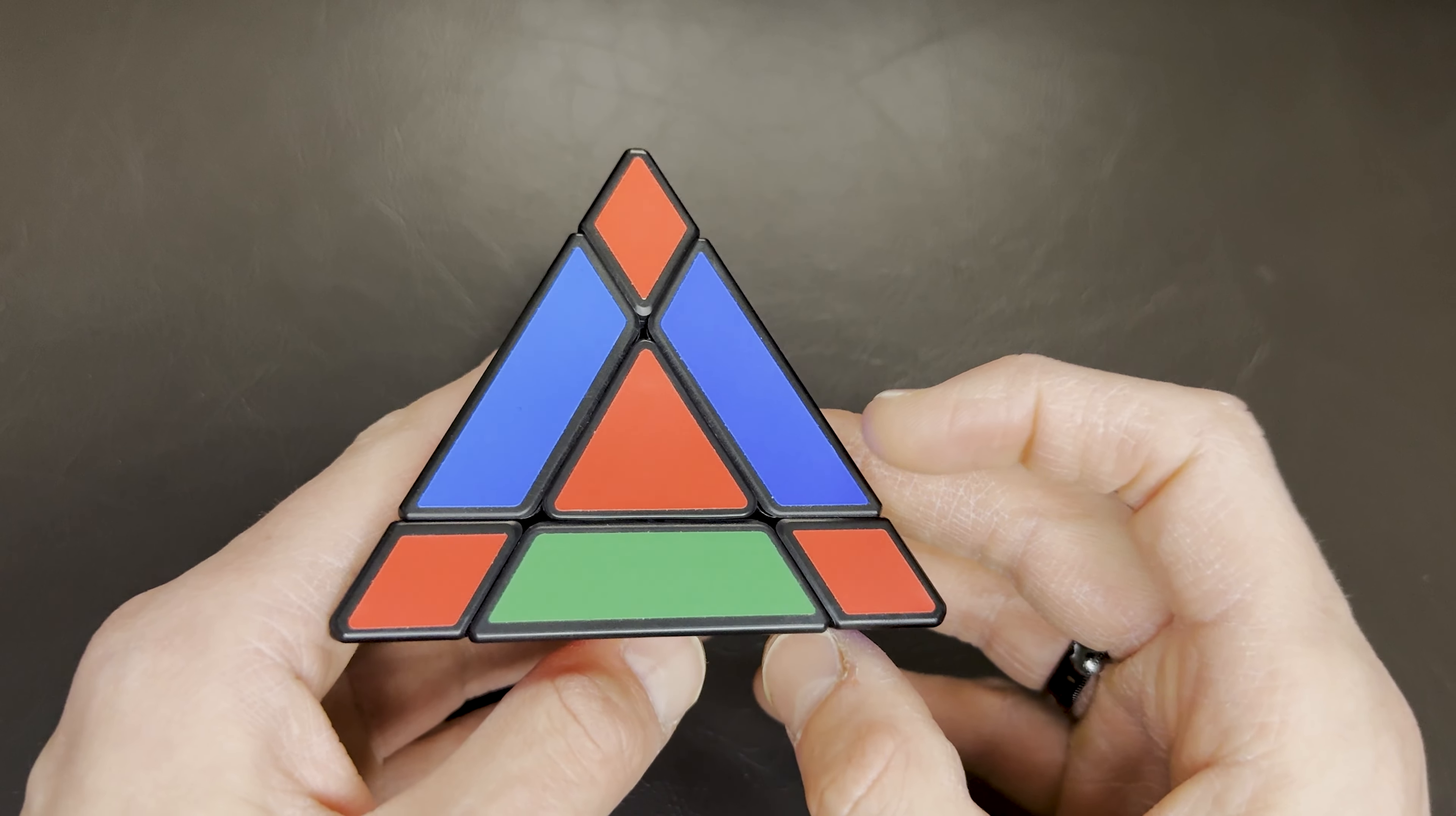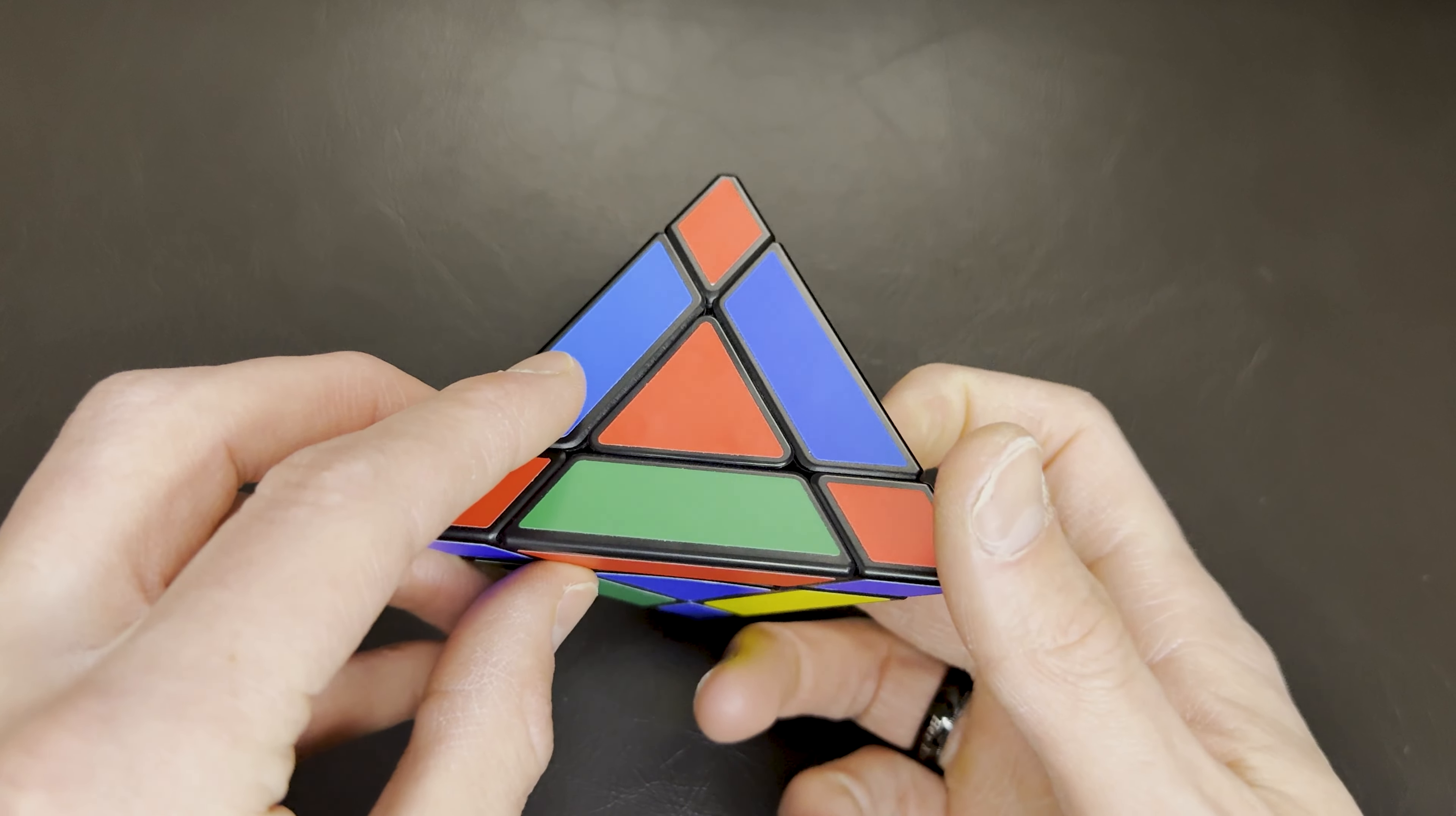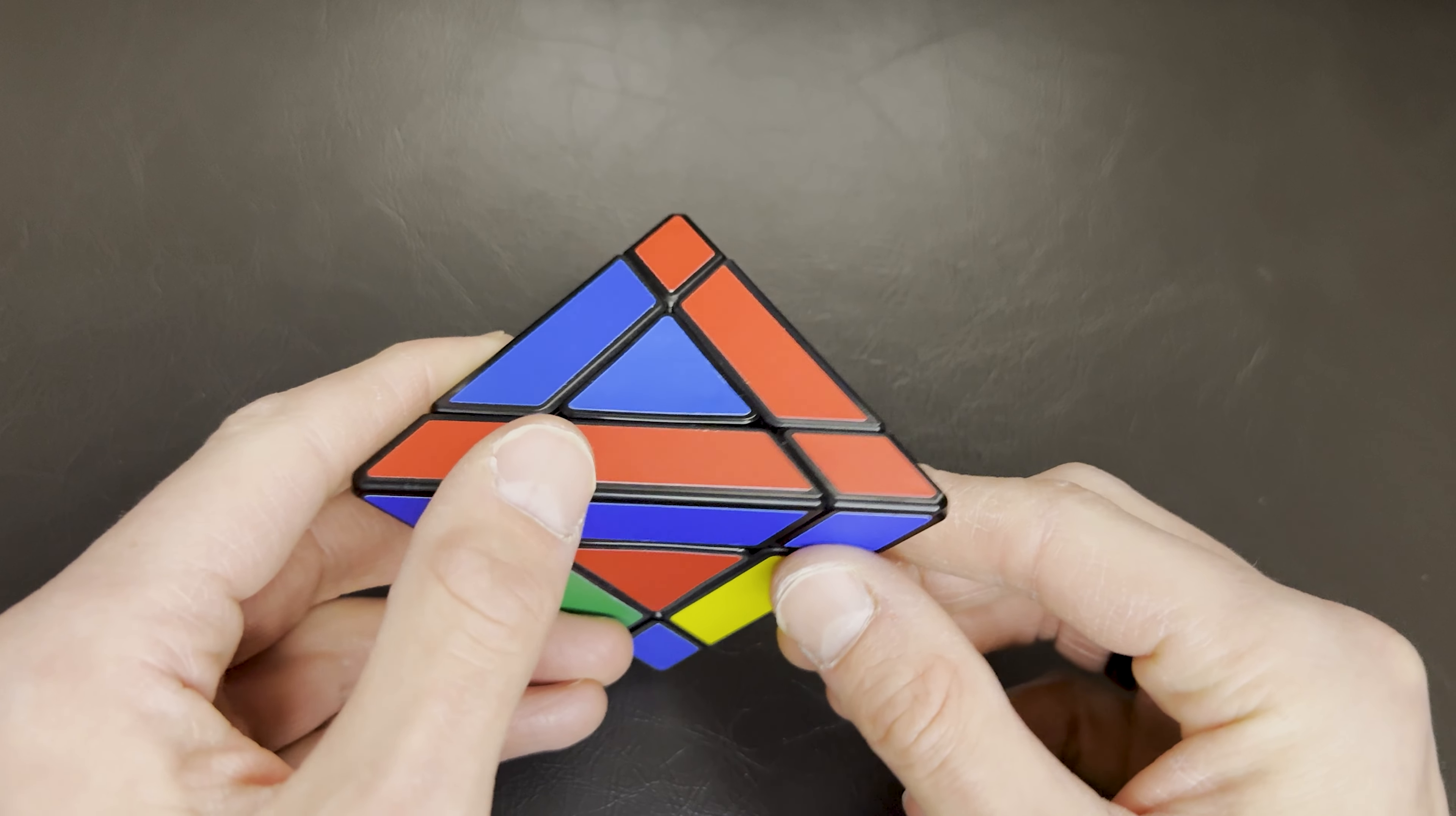The next step would be to get the red on the bottom here with the blue. So we want the red and blue piece. Looks like it's right there. We're going to do a move that actually moves this piece to here, and since the blue is here, the blue is going to go straight down on this bottom part. So all we do is push that towards us and then push the right towards us. Push left away, right away. There we go, red and blue.